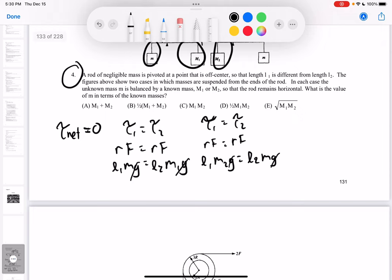Okay, so I have two equations. So I have L1 m equals L2 m1, and then I also have the equation L1 m2 equals L2 m.